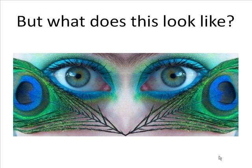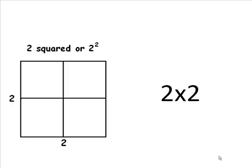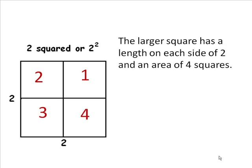But what does this look like? What do 4 squares look like? 2 squared, or 2 times 2, looks like this. It equals 4. 1, 2, 3, 4. The larger square has a length on each side of 2 and an area of 4 squares.